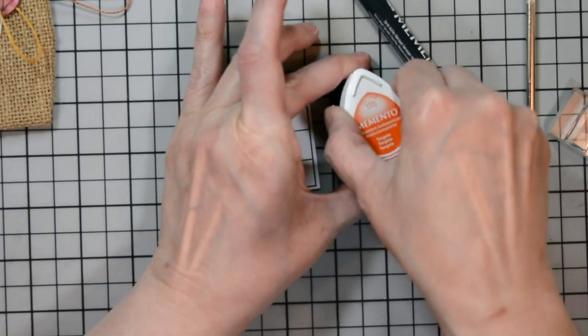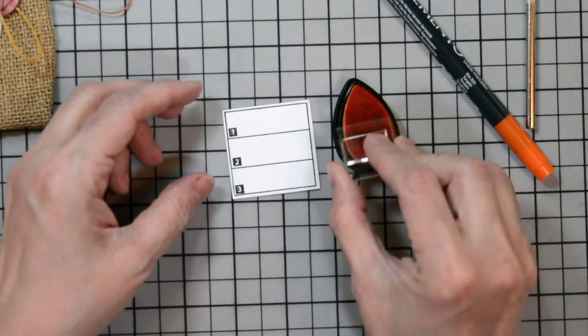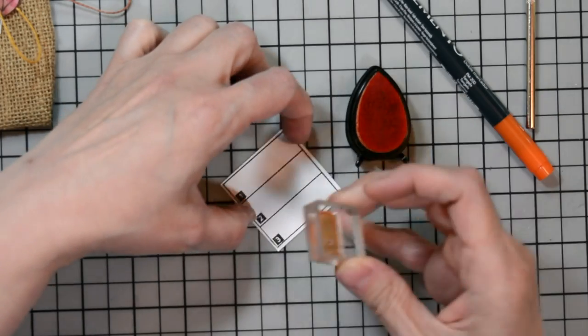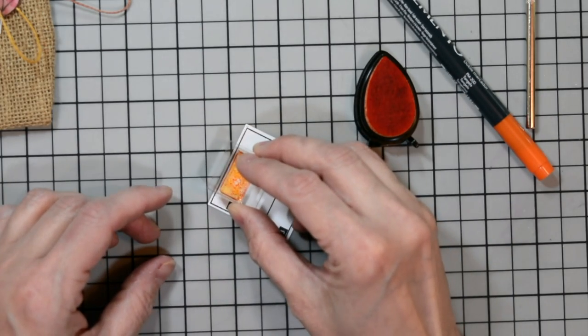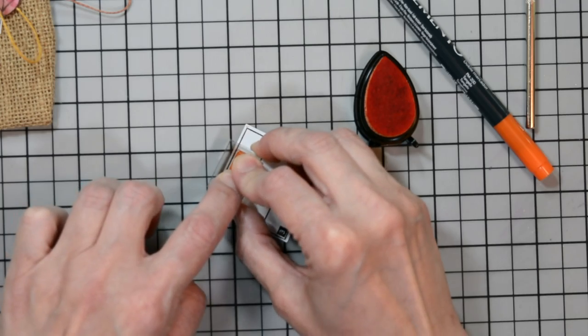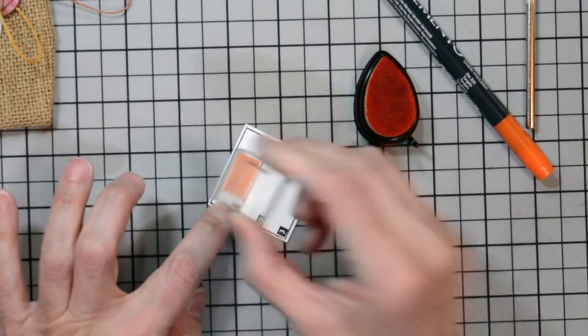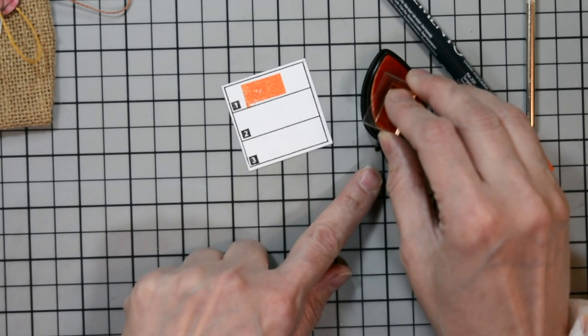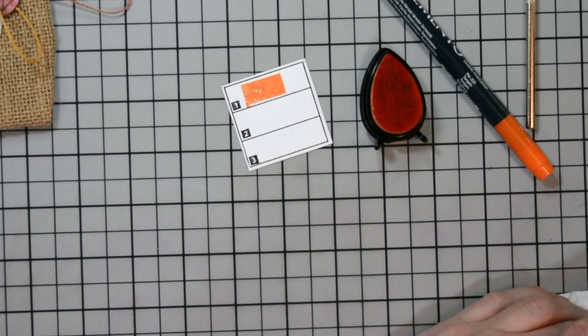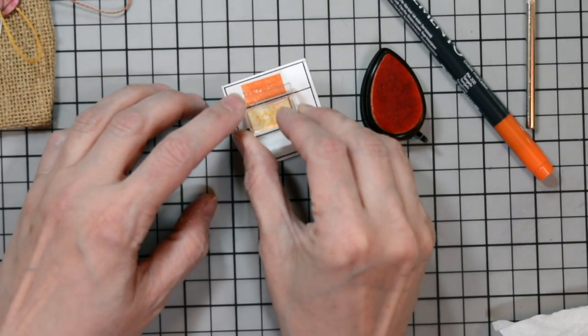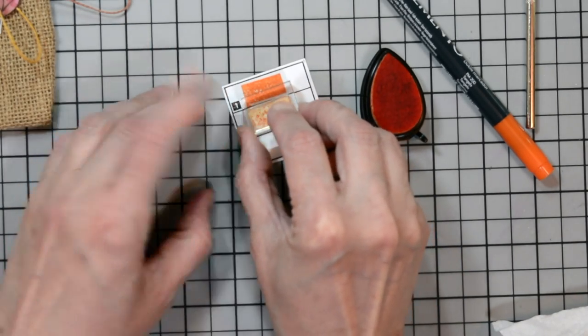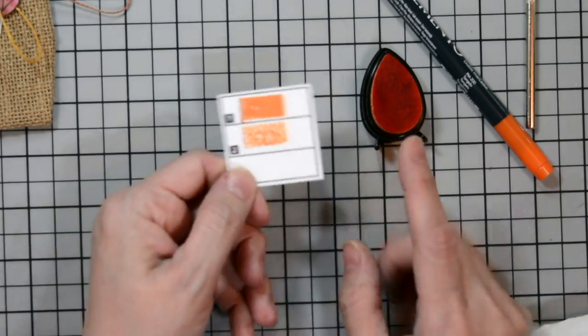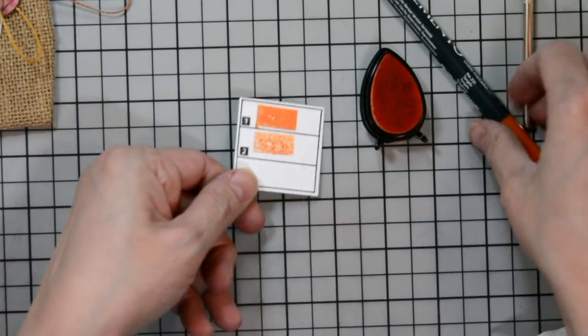I'm going to start with the ink pad. Today we're swatching out Memento in Tangelo. I'm going to ink up my stamp and stamp it in position one of my swatch card. Now for slot two, I'm going to ink up my stamp again, stamp it off once onto a piece of scrap paper, and stamp it in slot two. This will give me a second generation image, meaning my ink is slightly lighter than the first one. It's less saturated.